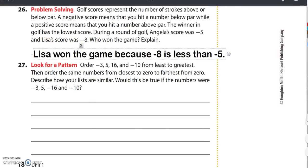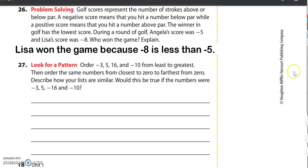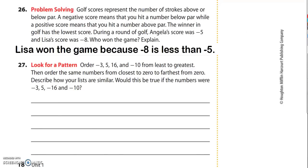All right, one more, number 27. This might be the hardest one, but that's okay. Question 27 says look for a pattern. There's several things to do here. We're going to kind of do one at a time. 27 says order negative 3, 5, 16, and negative 10 from least to greatest.